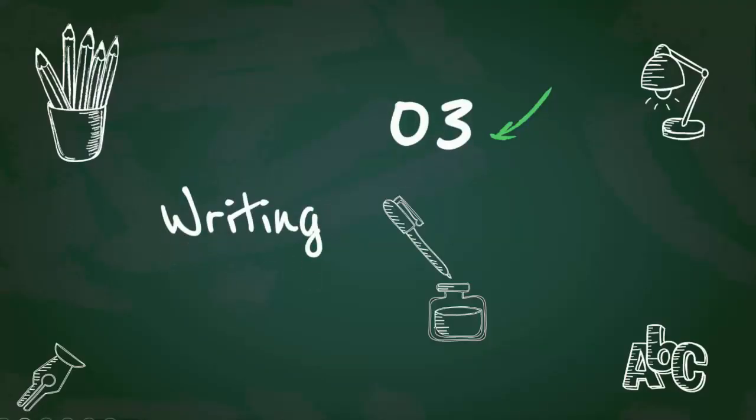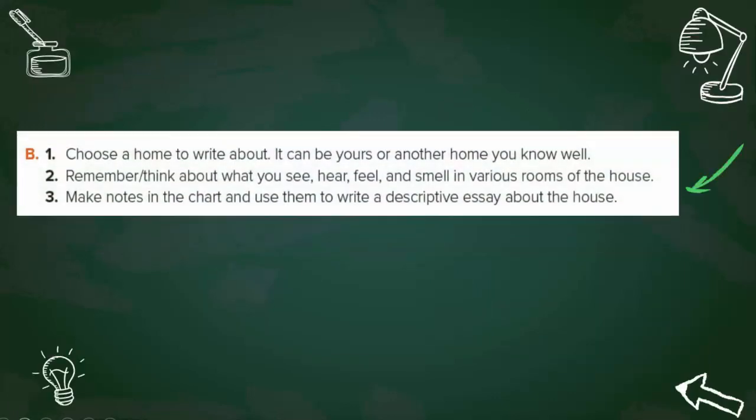Free writing — B. One: Choose a home to write about. It can be yours or another home you know well. Two: Remember, think about what you see, hear, feel and smell in various rooms of the house. Three: Make notes in the chart and use them to write a descriptive essay about the house.